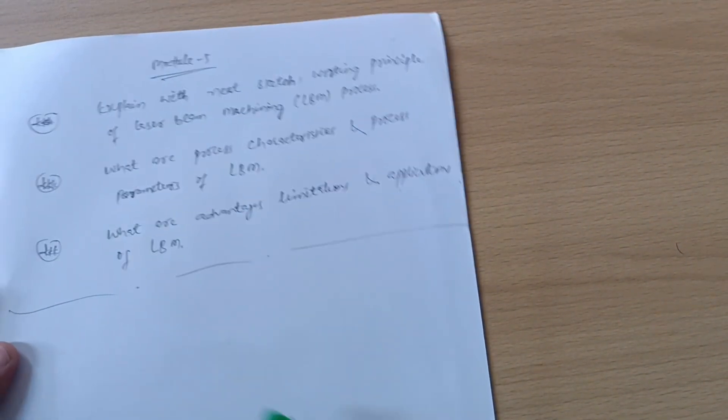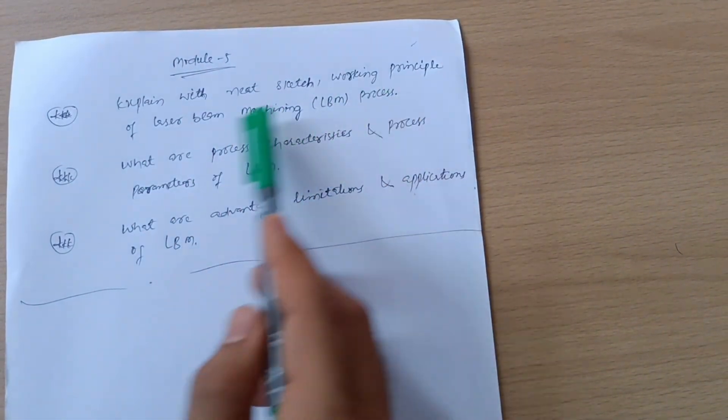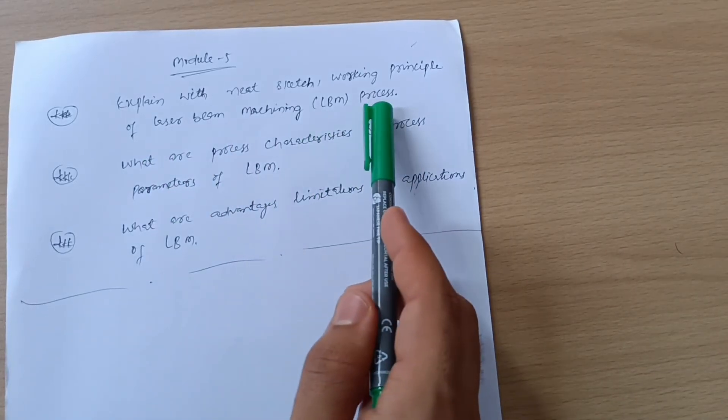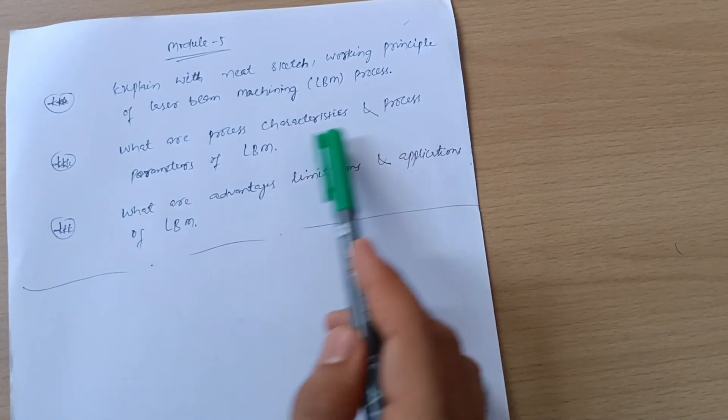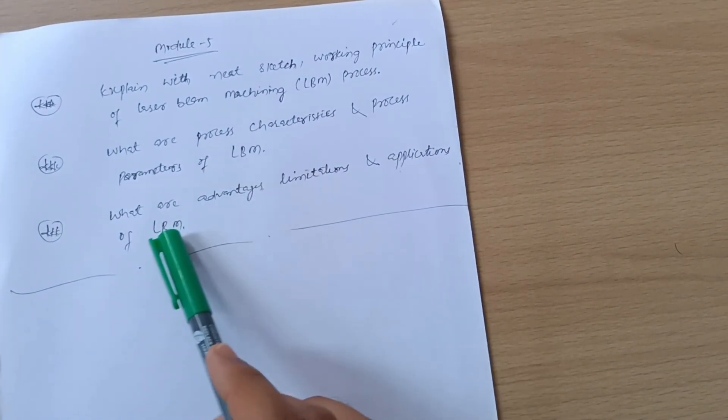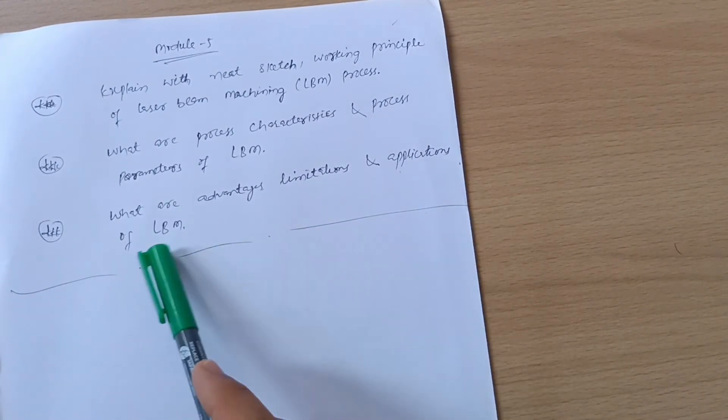Last module five - you have to cover three questions only: with the neat sketch working principle of laser beam machining LBM process, what are process characteristics and process parameters of LBM, what are advantages limitations and applications of LBM. These are only one part which I have chosen. You can easily go through only one part and neglect the next chapter.